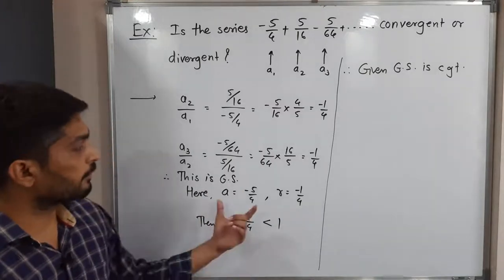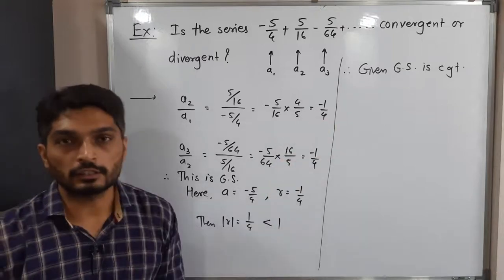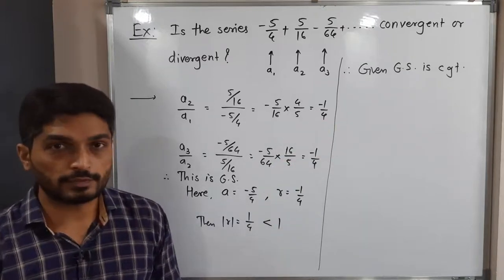This is our conclusion and we have got first term and common ratio. We got mod R is less than 1. Therefore, given geometric series is convergent.